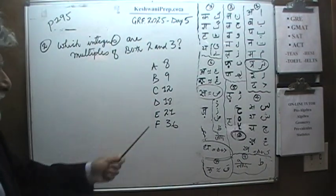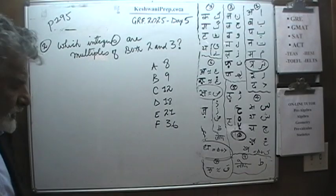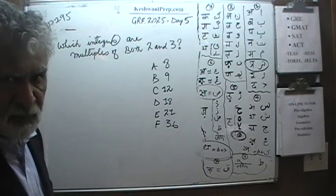Here we have 6 answer choices. The question is which integers are multiples of both 2 and 3? As I said, it is very simple. Let's begin.